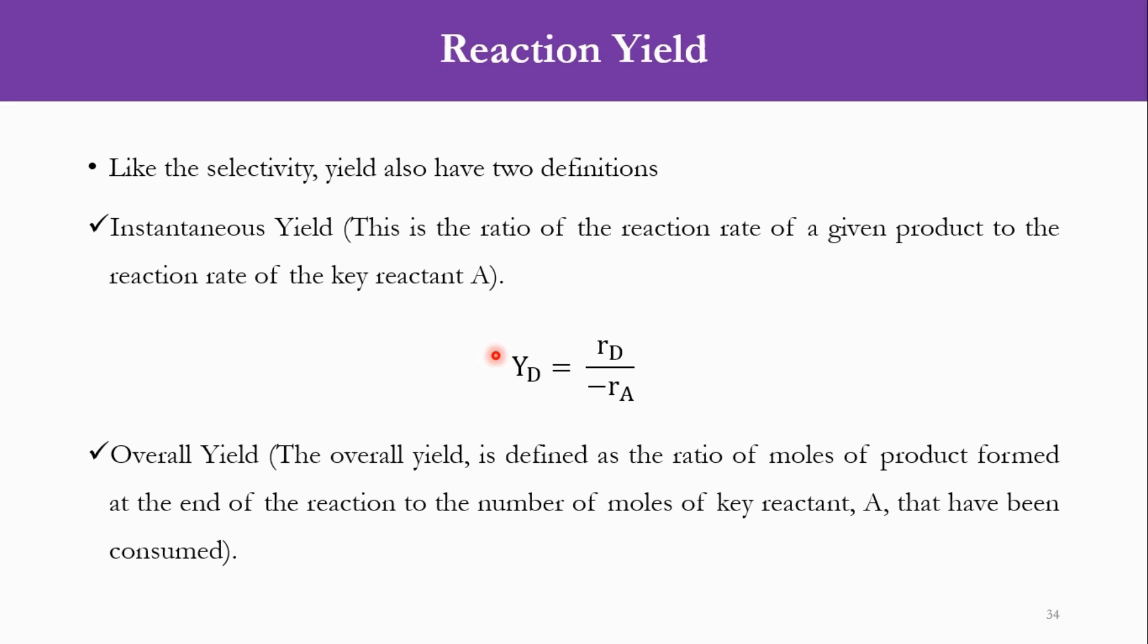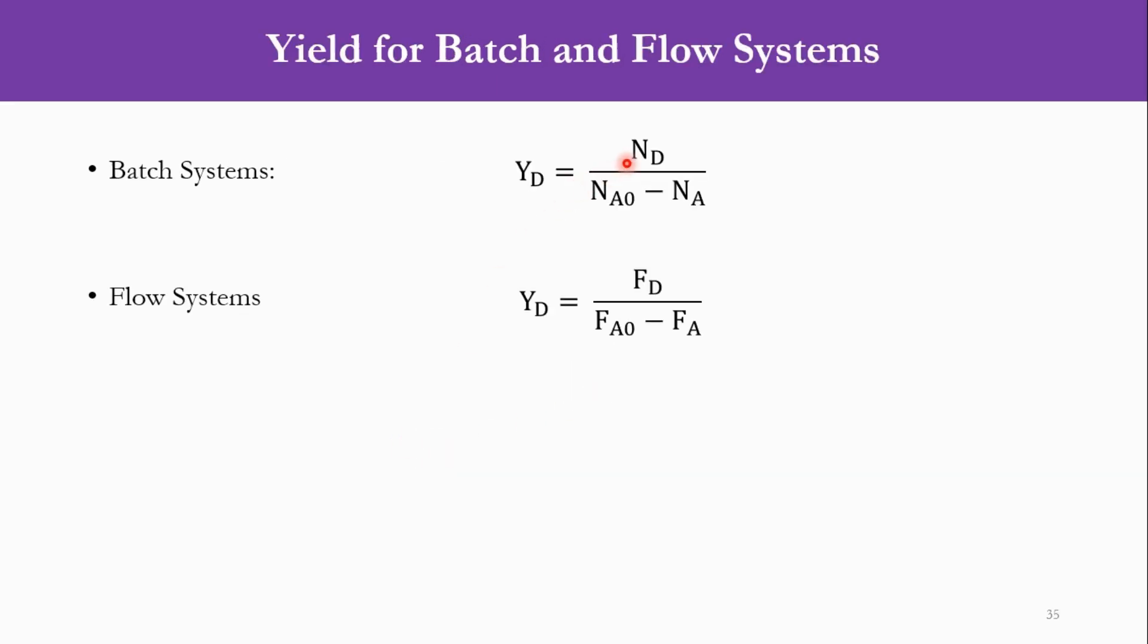Now talking about yield, again the yield has two definitions, instantaneous yield and overall yield, just like we have seen the instantaneous selectivity and overall selectivity. The instantaneous yield formula is the rate of formation of the desired product divided by the rate of consumption or rate of disappearance of the limiting reactant or the key reactant, which is A in the system. While in case of overall yield, it will be defined as the number of moles of D, which is the desired product produced, divided by the number of moles of A, which is the limiting reactant consumed, if this is a batch system. Or in case of flow system, it will be the flow rate of desired product produced divided by the flow rate of the limiting reactant consumed in the system.